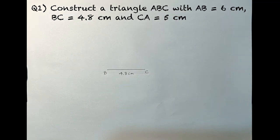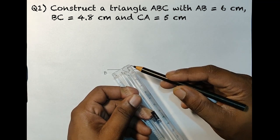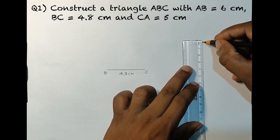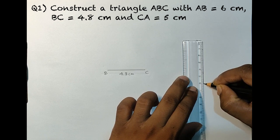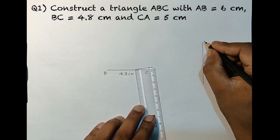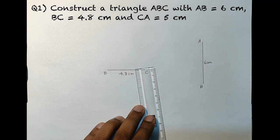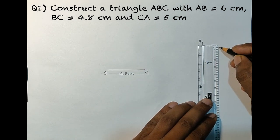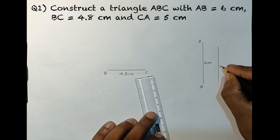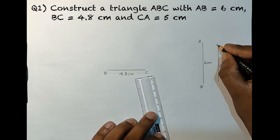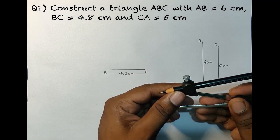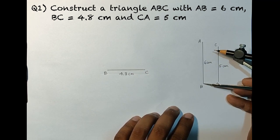Now we need the other two sides. For that we will take side AB, that is 6 centimeters, and draw it to the right side separately in order to take the radius. So here we have our 6 centimeters — let's write 6 centimeters and label it AB. Then let's draw CA, that is 5 centimeters. Write the measurements, label it CA, and now with the help of the compass let's take the measurement of AB, 6 centimeters.